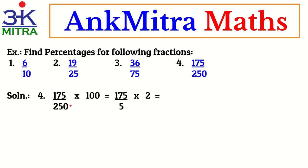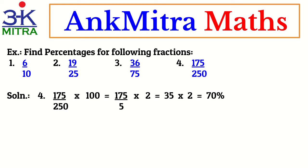The next step: we get 175 divided by 5, multiplied by 2. This 100 and 250 have reduced to these values after dividing both by 50. After this, 175 divided by 5 — we can certainly divide 175 by 5 — gives us 35. So 35 multiplied by 2 is our final answer: 70%. So if in a school there are 250 students and 175 of them attended on a particular day, the overall attendance was 70%.